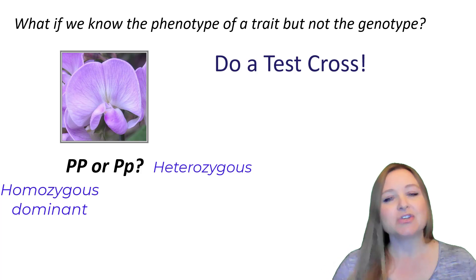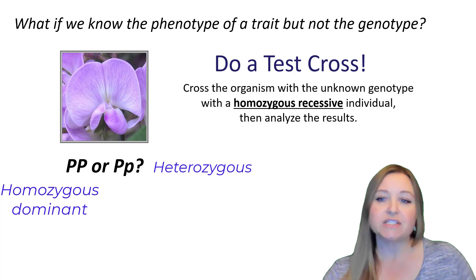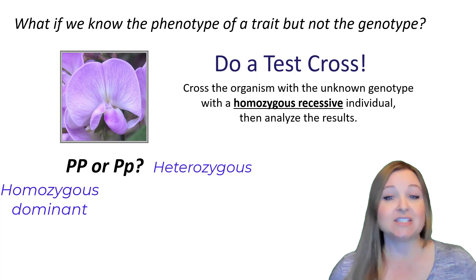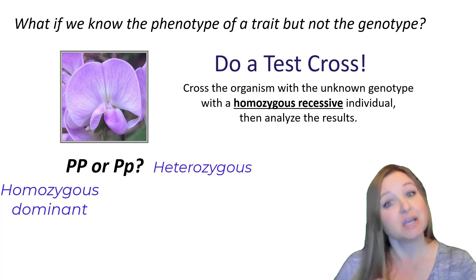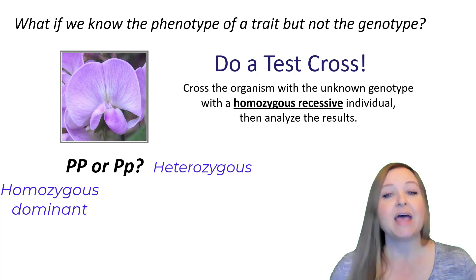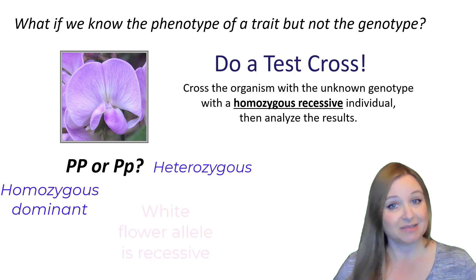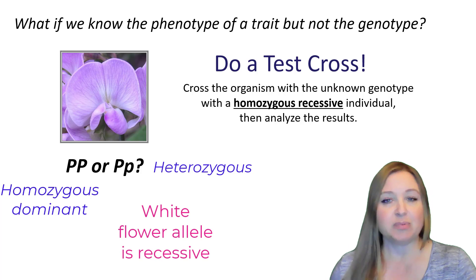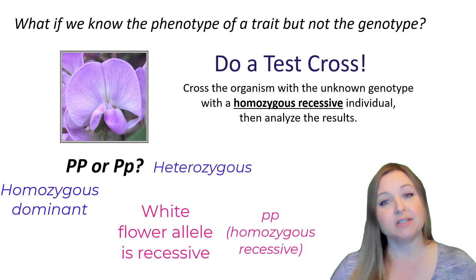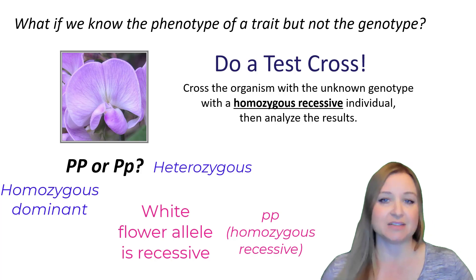In a test cross, we cross or breed the organism with the unknown genotype — in this case our purple flowering pea plant — with a homozygous recessive pea plant, and then we analyze the results. White is the recessive allele for pea plant flower color, so to have white flowers the genotype has to be little p, little p. That individual must have two recessive alleles.